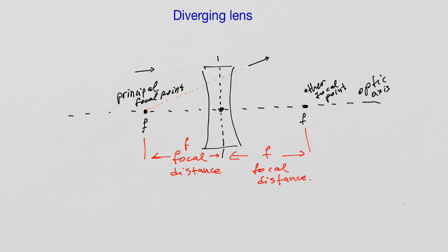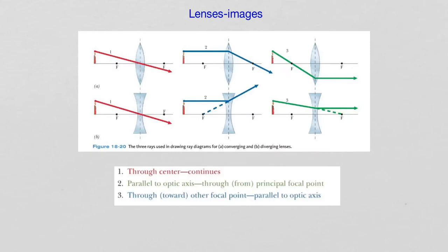Now let's look at exactly how we build the images of objects placed in front of a converging lens. I'm going to place an object in front of the lens, beyond the focal point, and use three specific light rays to build the image. Ray number one passes straight through the center of the lens without refraction. Ray number two is incident upon the lens parallel to the optic axis, and after refraction it passes through the focal point behind the lens. Ray number three passes through the other focal point, and is then refracted by the lens to continue parallel to the optic axis behind the lens.